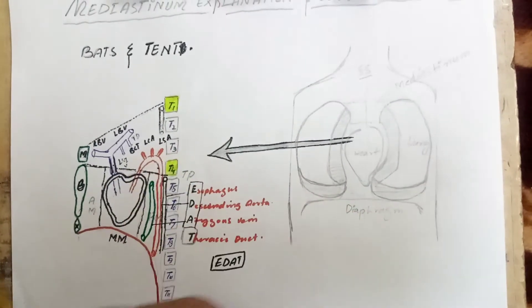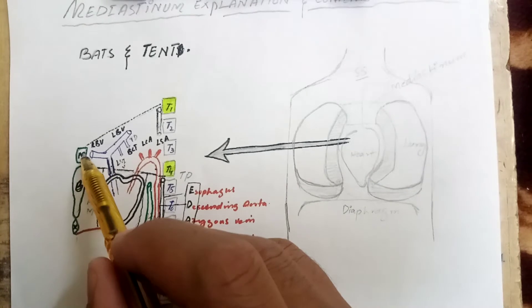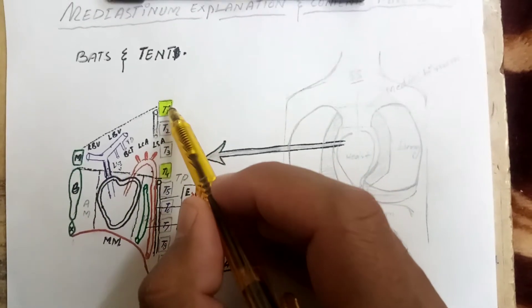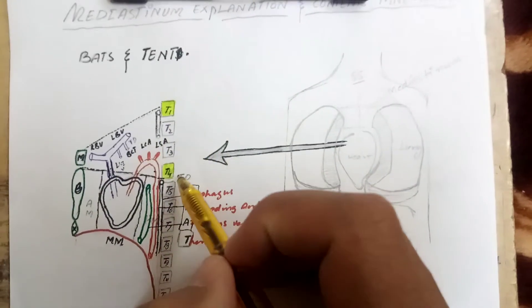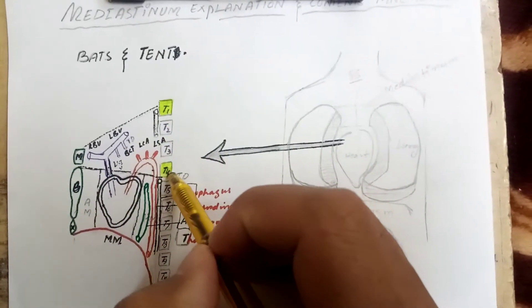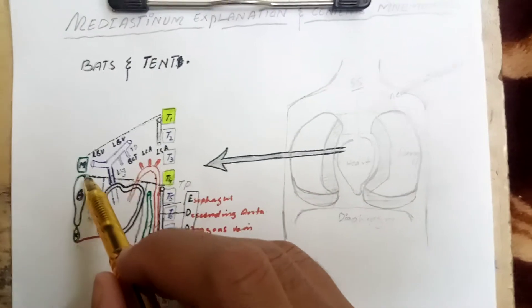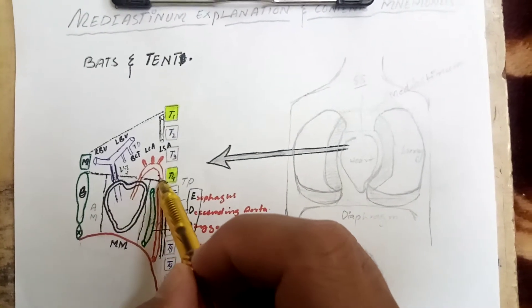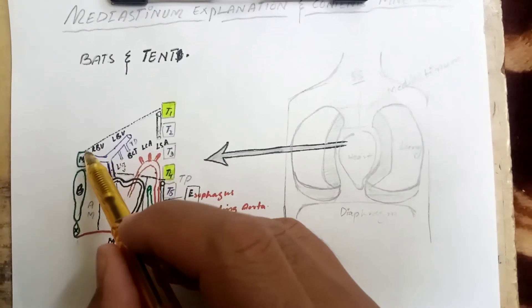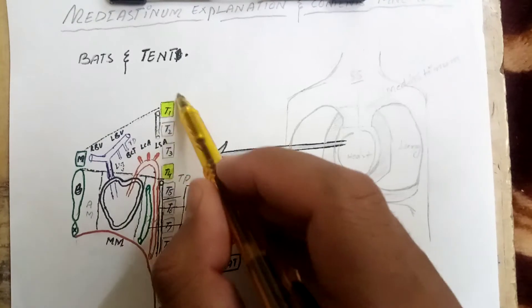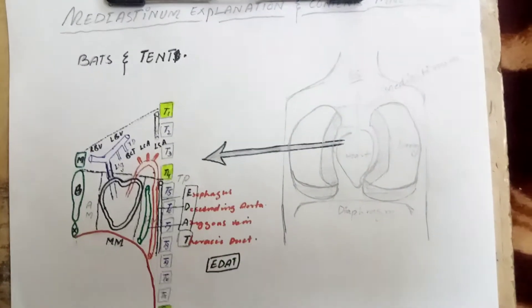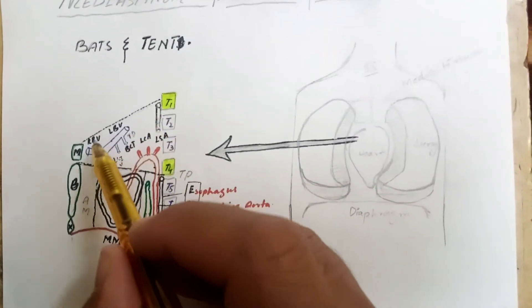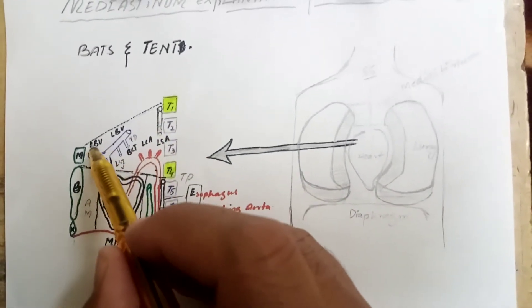The area just above the thoracic plane is the superior mediastinum. Its boundaries are: anteriorly bounded by the manubrium, posteriorly bounded by T1 up to T4 vertebrae, inferiorly bounded by the imaginary thoracic plane, and superiorly by the thoracic inlet.